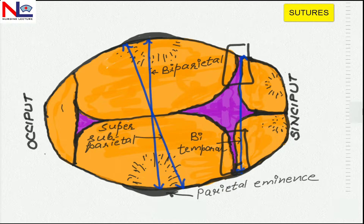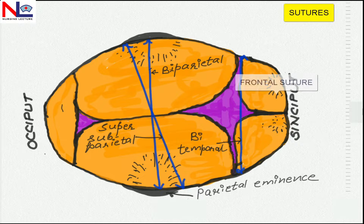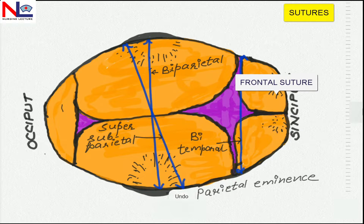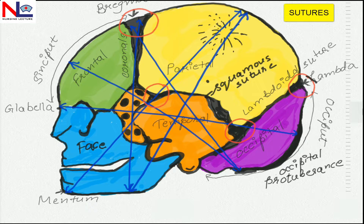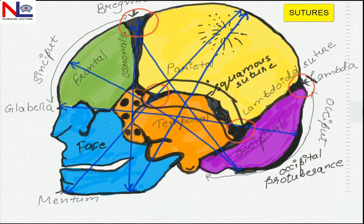Then there is the frontal suture, which lies between the two frontal bones, and it becomes closed or fuses at the age of eight years. Looking at sutures further from a lateral aspect, here is the squamous suture — it lies on either aspect of the fetal skull and it separates the temporal bone from the parietal bone.